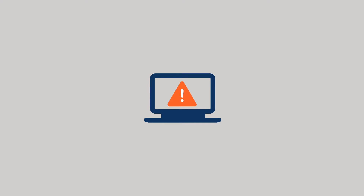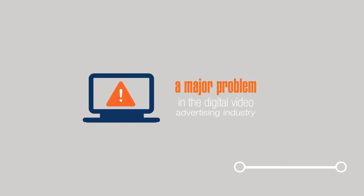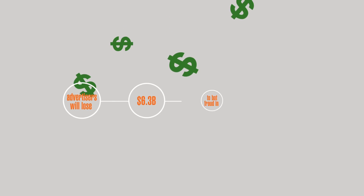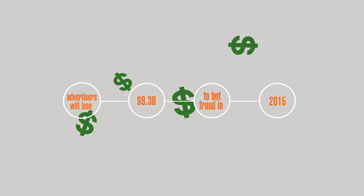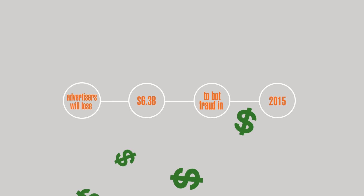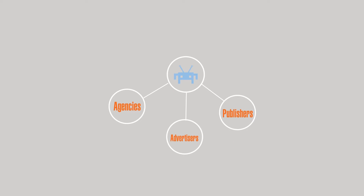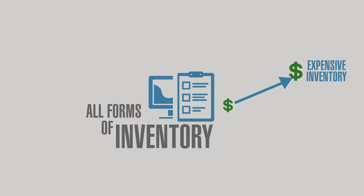Bot fraud has become a major problem in the digital video advertising industry. It's estimated that advertisers will lose $6.3 billion to bot fraud in 2015. Bot fraud impacts everyone — advertisers, agencies, publishers — and it impacts all forms of inventory, from low-price sites to the most well-known publishers.